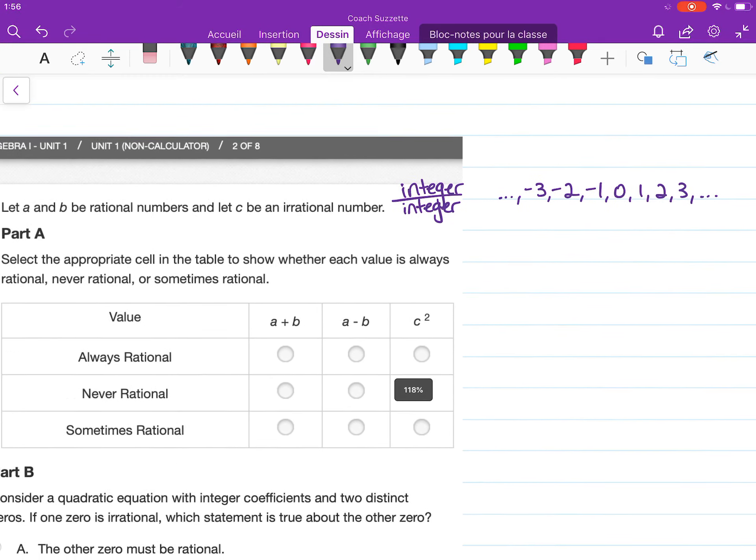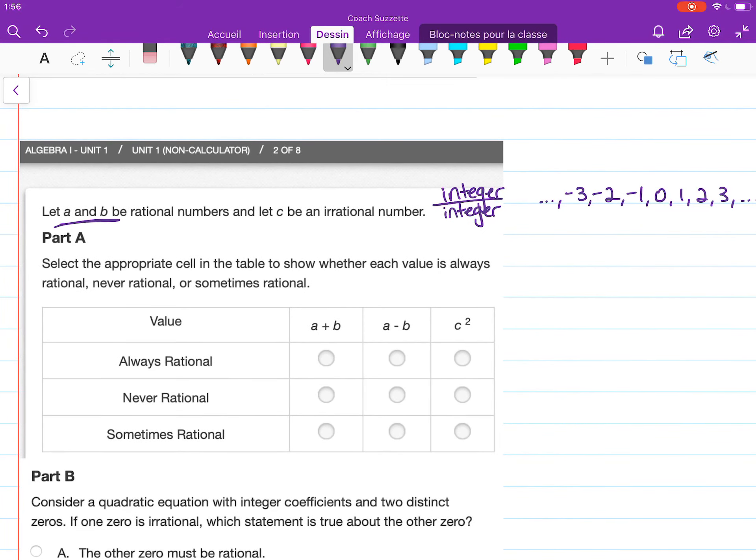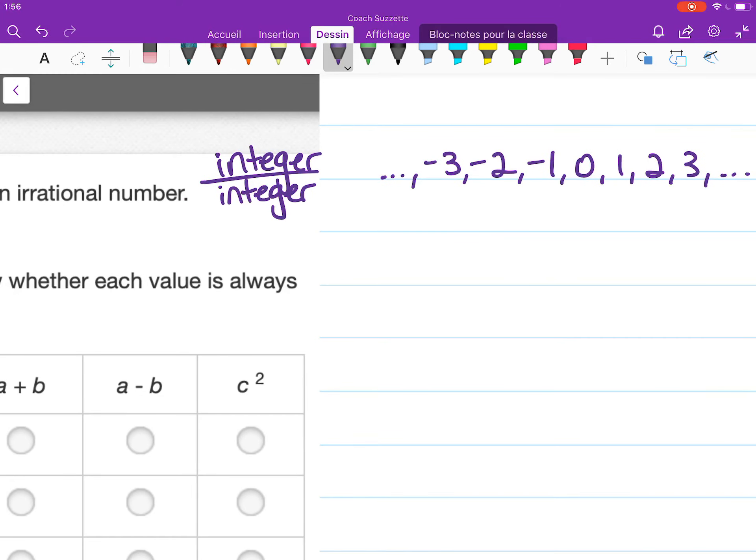Okay, so let's pick numbers for A and B. Let's say A equals 1 over 2 and B equals 4 over 3.